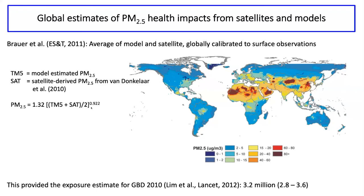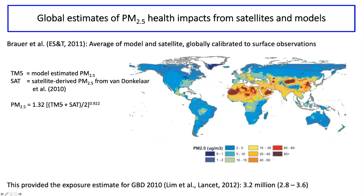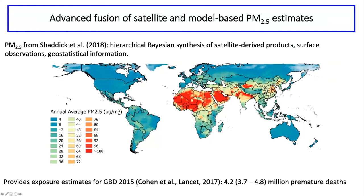This was the Global Burden of Disease study in 2010 — these studies have a year associated with them that's when the work got underway, not when they were published. The GBD 2010 study, coming out in 2012, estimated about 3.2 million premature deaths from PM2.5, with an uncertainty range of 2.8 to 3.6 million. As described earlier, these statistical approaches that take observed PM2.5 and observed AOD to develop a regression, then apply it elsewhere, represent one camp; and there's the model-based approach — and already these approaches are being fused.